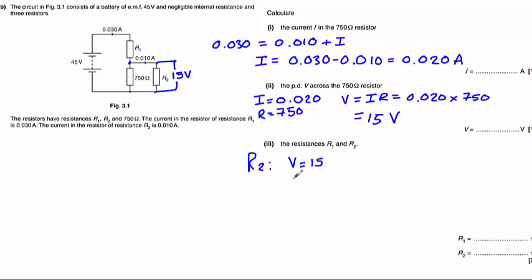We know the current I equals 0.010 amps. So the resistance is voltage divided by current, which equals 15 divided by 0.010, which gives us 1500 ohms.